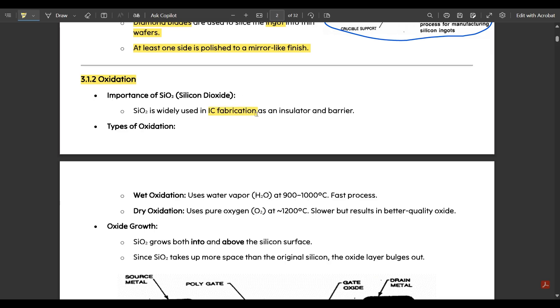Importance of silicon dioxide: Silicon dioxide is widely used in IC fabrication as an insulator and a barrier. Types of oxidation - there are mainly two types: wet oxidation and dry oxidation. Wet oxidation uses water vapor at temperature around 900 to 1000 degrees Celsius, which is a fast process. Dry oxidation uses pure oxygen, approximately in the range of 1200 degrees Celsius - slower, but results in better quality oxide. In the fabrication process we often go with dry oxidation because the temperature would be high and the process is slow, but we need better quality oxide.